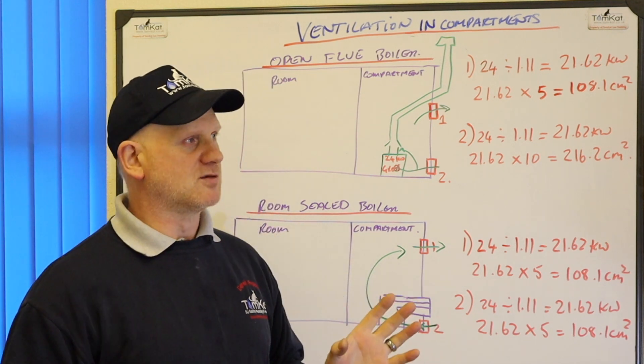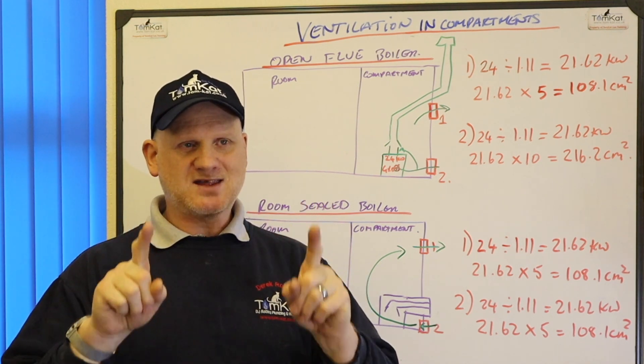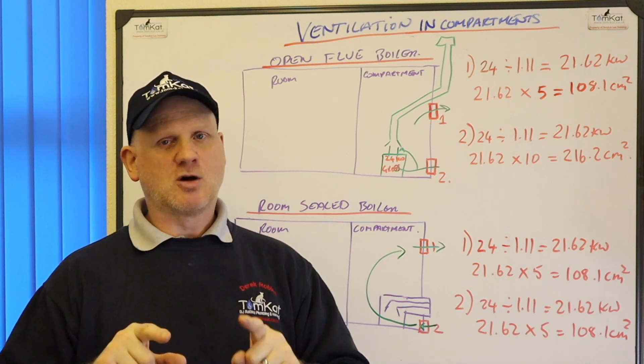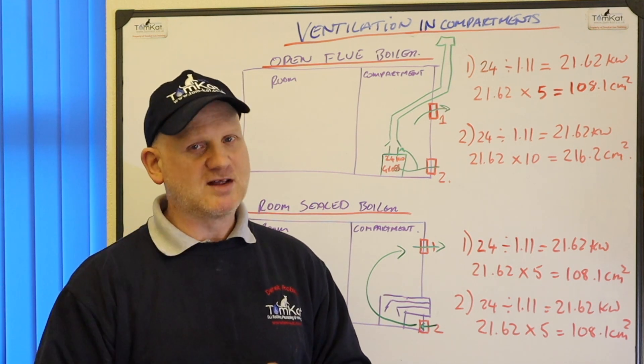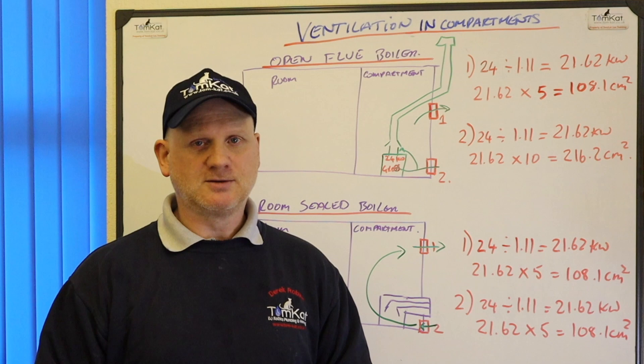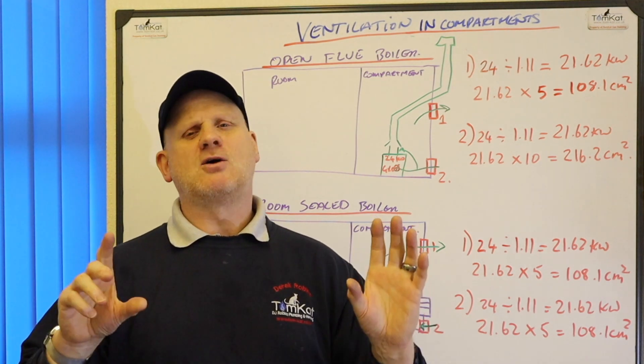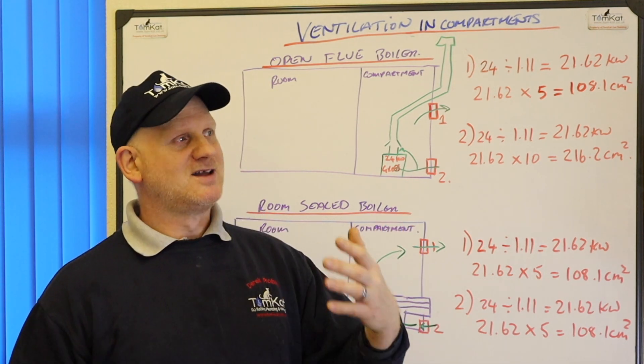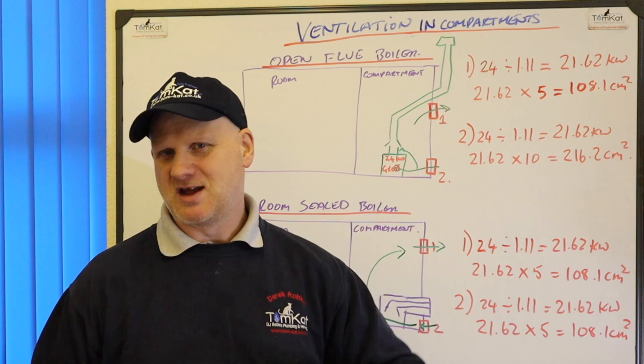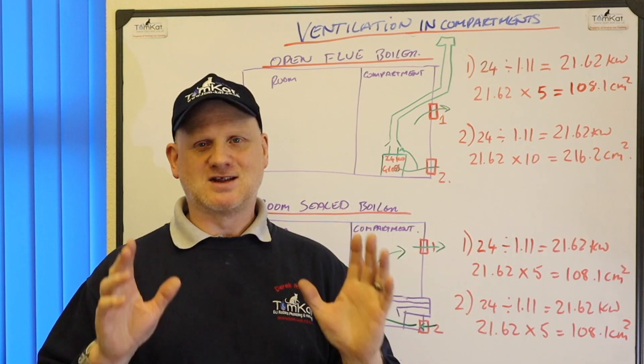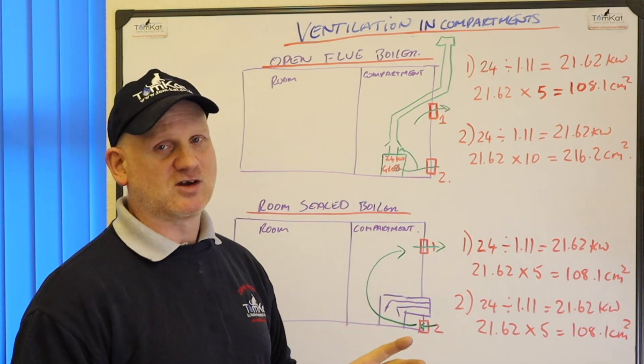Now, room sealed appliances in compartments. As I speak, as I film this video, there is no domestic boiler, condensing combi, condensing heat only, condensing system boiler that requires ventilation for combustion and ventilation for cooling. Okay. Now yes, there are a few boilers out there where you can use the air from the room. They've got specialist flues. They use old chimneys, but I'm not talking about that. I'm talking about standard installation boiler. It does not require air for combustion if it's room sealed. It gets its air for combustion from outside.